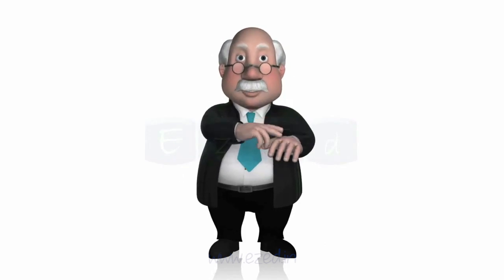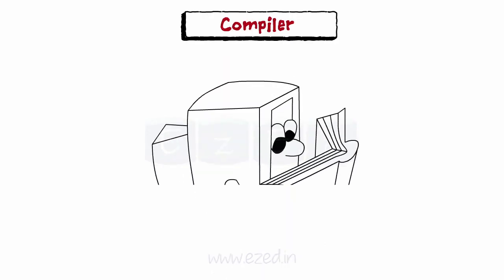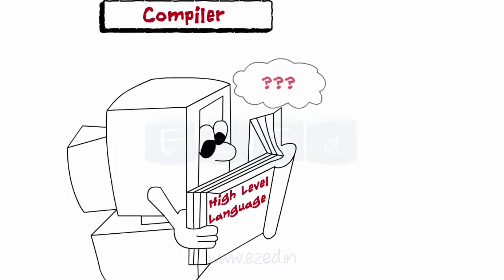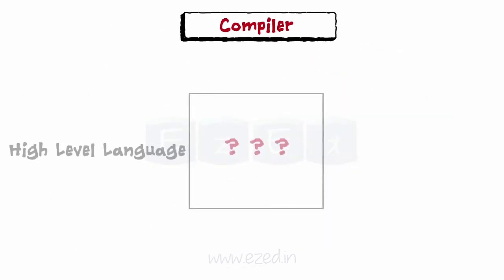It's time to concentrate now. As we know, computer's language of understanding is binary. If it is given instructions in a high-level language, it won't understand. To make a computer understand, this high-level language has to be converted into machine language.